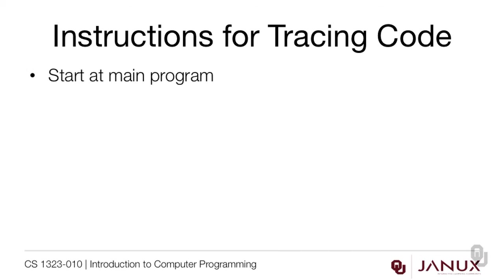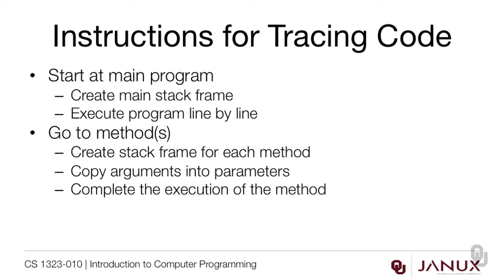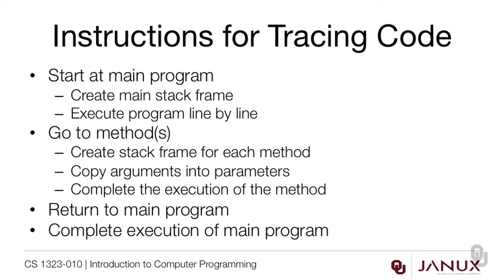Here are some instructions for tracing code. You always start at the main program because that's where the action is, and you create something called the main stack frame — the area where all local variables in the main program are stored. Then you execute the program one line at a time. As you encounter methods, you go to them, create a stack frame for each method, and copy the arguments into the parameters. Then you complete the execution of the method and return to the main program. Once we've completed execution of the main program, the program stops and we can see what's happened.